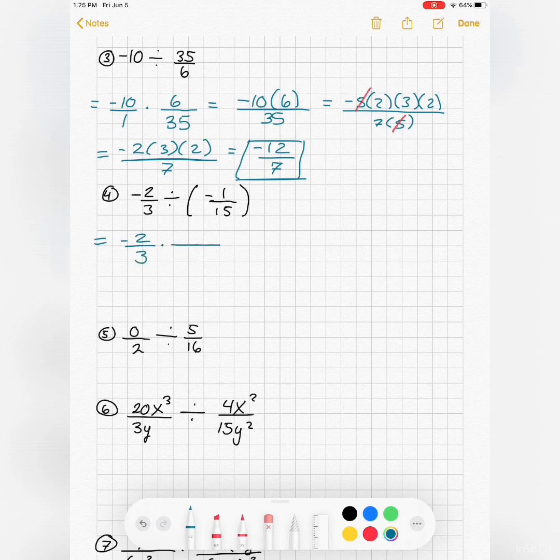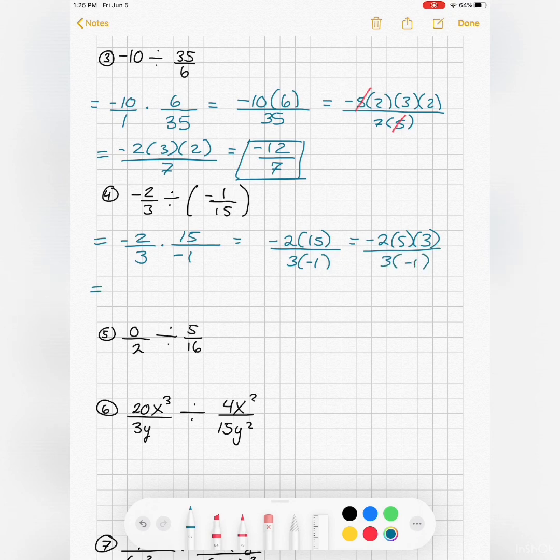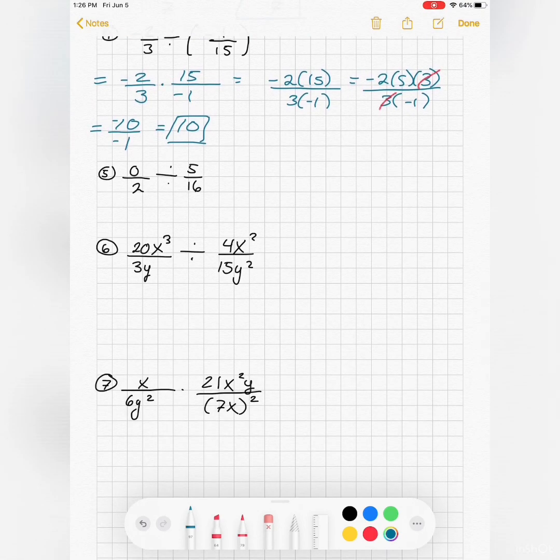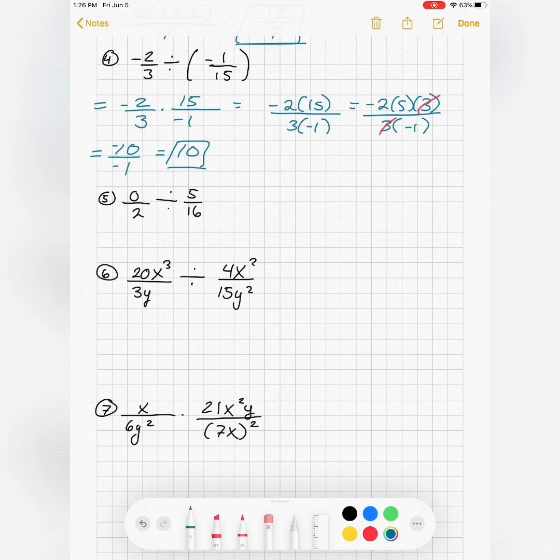Negative 2 thirds, flip the second fraction, multiply. The 3's cancel, so negative 10 over negative 1. Remember, a negative divided by a negative is a positive.